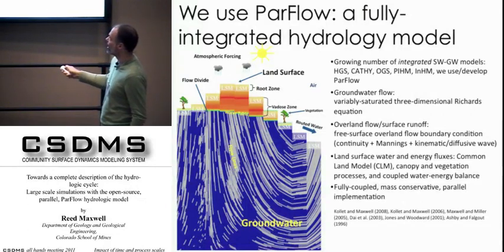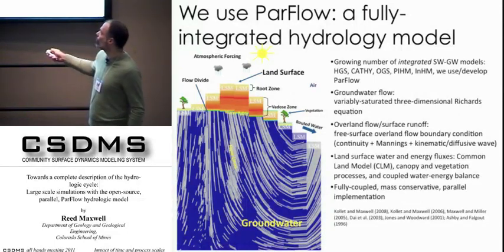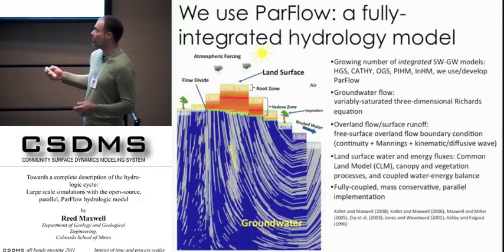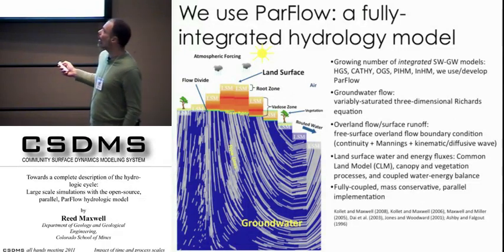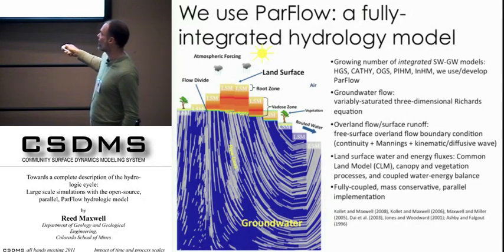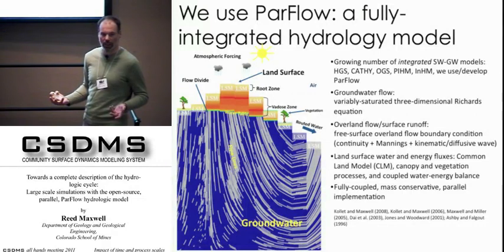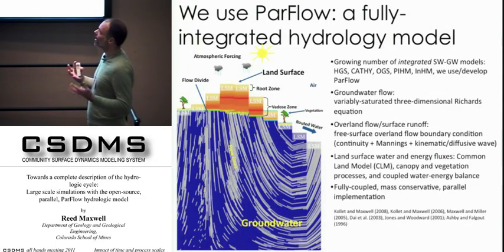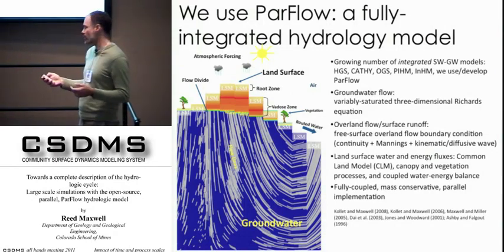We can think about this modeling system with a cartoon: we have topography, atmospheric forcing, and drive the model with observed meteorology — pressure, temperature, solar, precipitation. We populate the land surface with vegetation and land cover. The model evolves naturally: areas with a very deep vadose zone, areas with a very shallow vadose zone where vegetation may be groundwater-dependent. Anywhere we have ponded water through excess saturation or excess infiltration, we get automatic topographic routing. We can look at flow divides and do contaminant transport tracing flow lines.